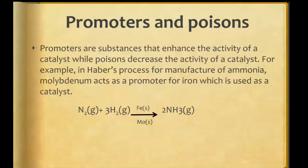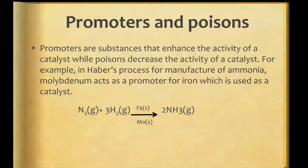For example, in Haber's process, nitrogen and hydrogen react to form ammonia and here iron is the catalyst. The iron catalyst's efficiency can be increased by a promoter, and the promoter used here is molybdenum. So molybdenum increases the efficiency of the catalyst.